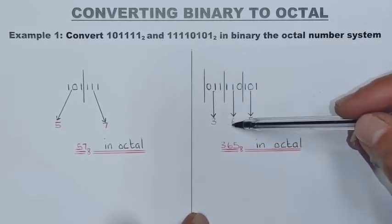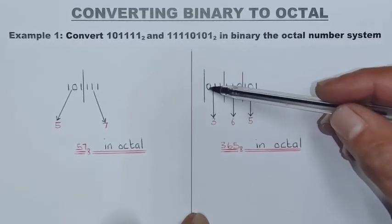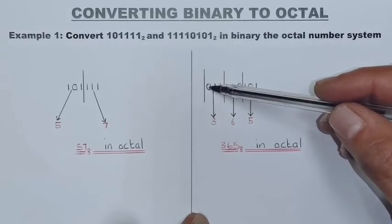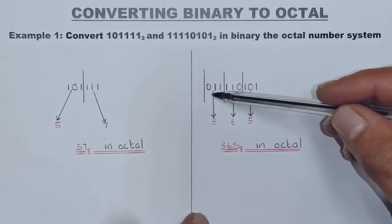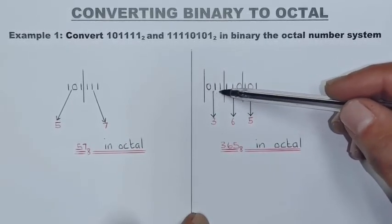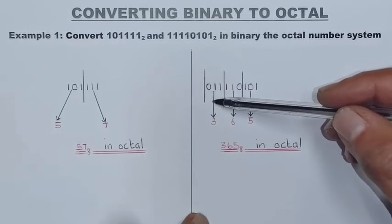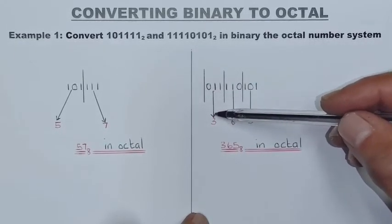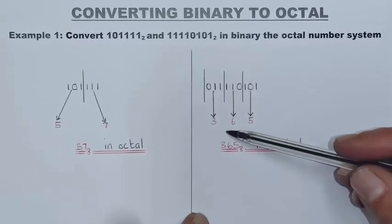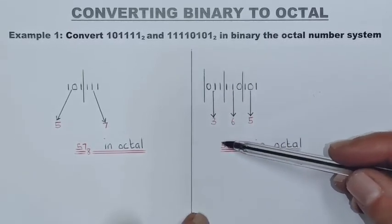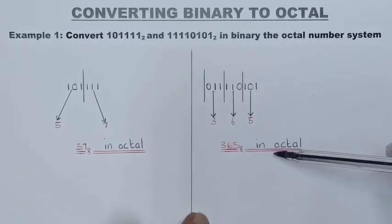Which means then my number at the end of the day will be wrong, and that's why I'm adding a 0, which means my binary number actually stays the same. So the equivalent for this then is going to be 3, and my octal number at the end of the day is 365 in octal.